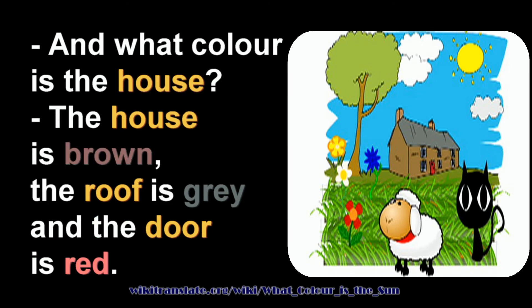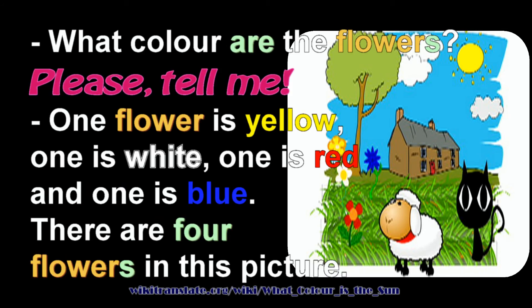And what colour is the house? The house is brown. The roof is grey. And the door is red. What colour are the flowers? Please tell me. One flower is yellow. One is white. One is red. And one is blue.